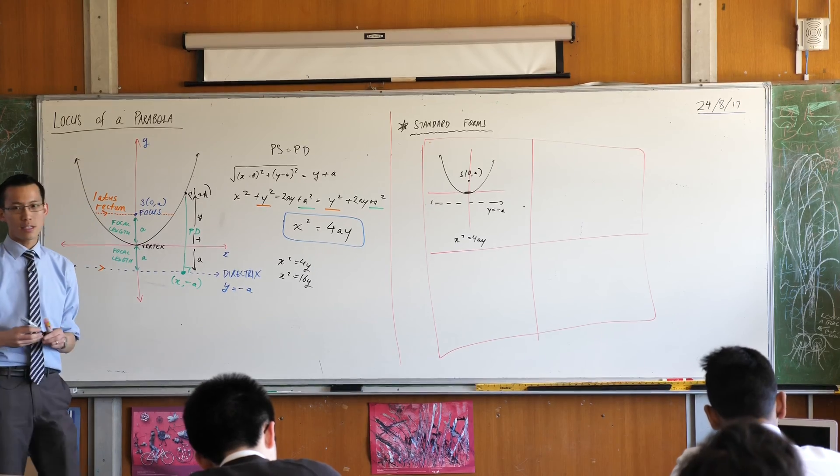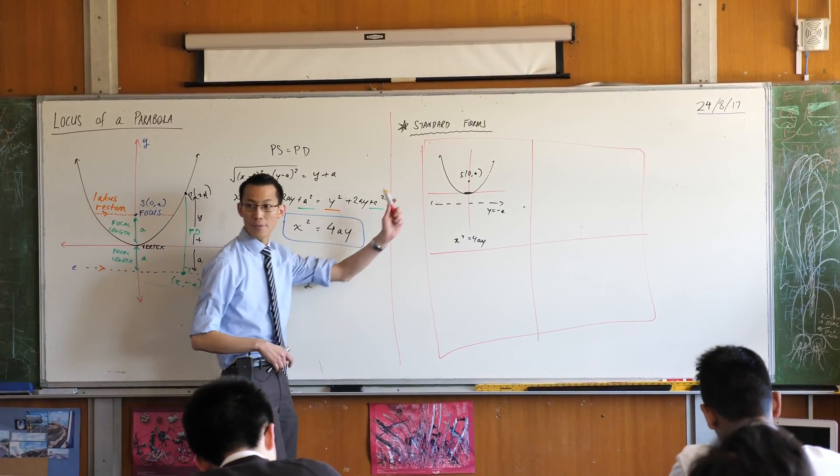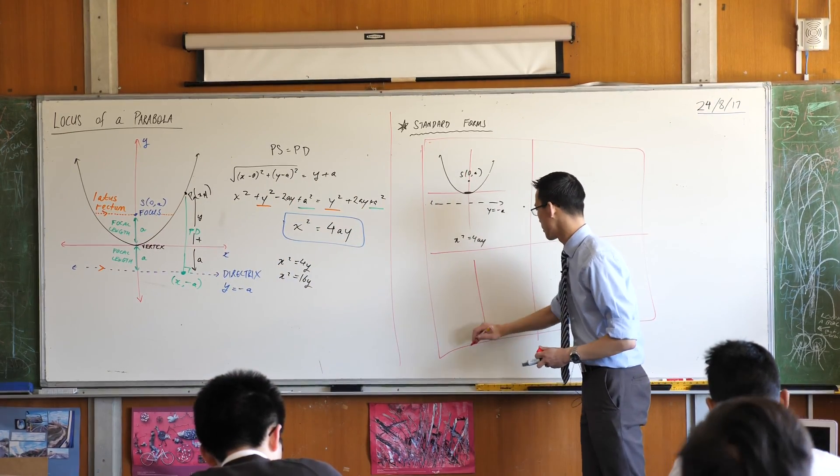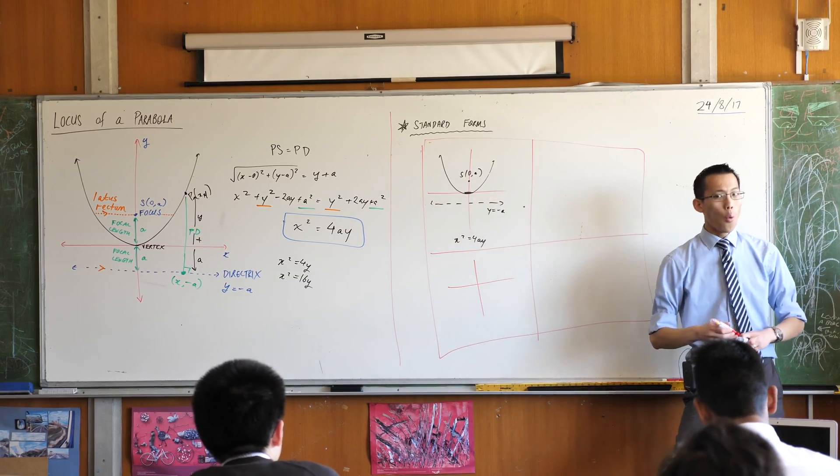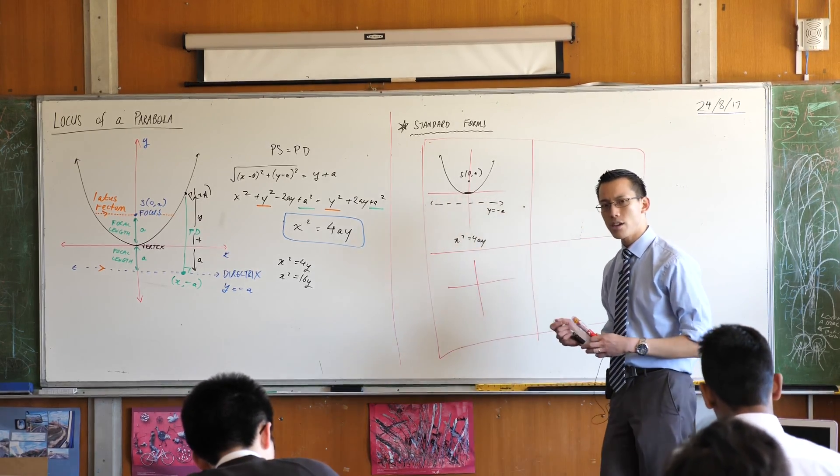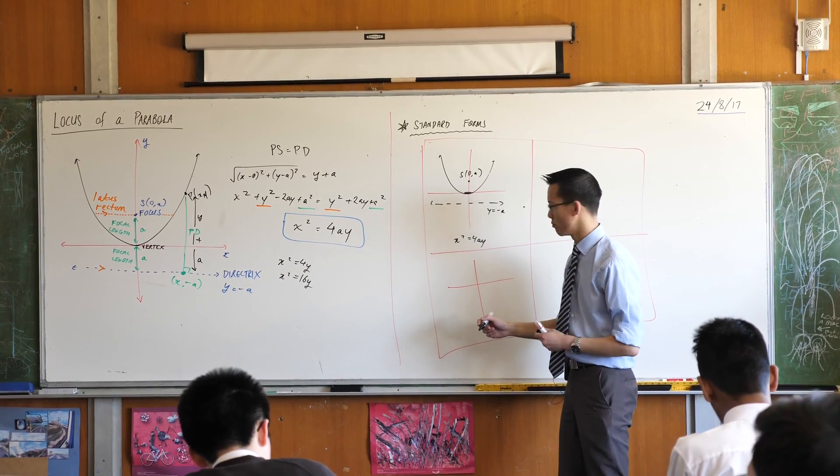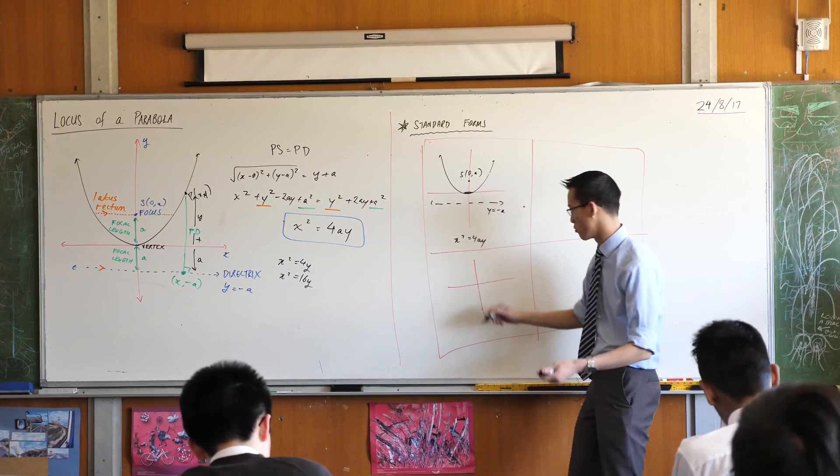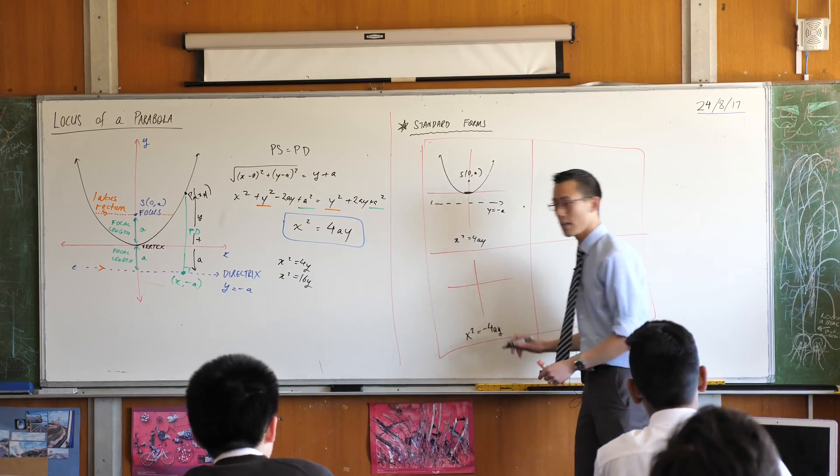But I can just as easily have a downward facing parabola, right? So this is concave up, concave down. Would have what kind of equation, a concave down parabola? x squared would be equal to negative 4ay or you could put the minus on the other side, it doesn't really matter. So I'm gonna write minus 4ay here, okay?